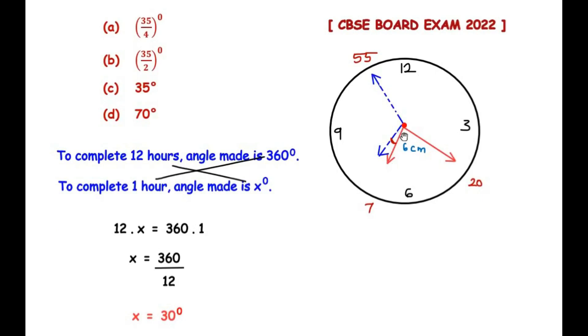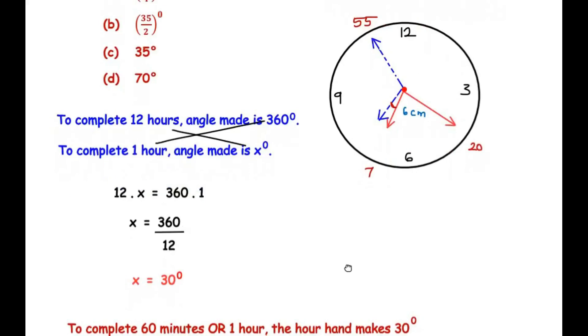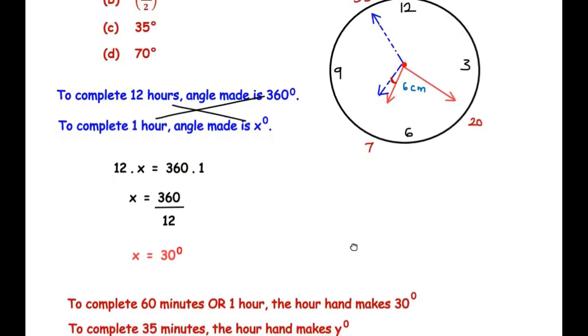So 8 o'clock to 9 o'clock also the angle made by the hour hand is 30 degrees, and so on. Now once we have got this, let us represent the hours in terms of minutes. Here we have: to complete 60 minutes or one hour, the angle made by the hour hand is 30 degrees.